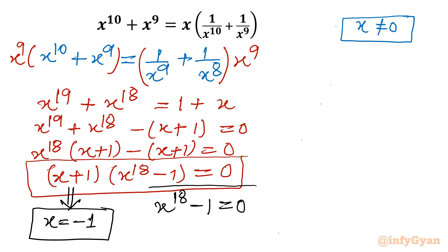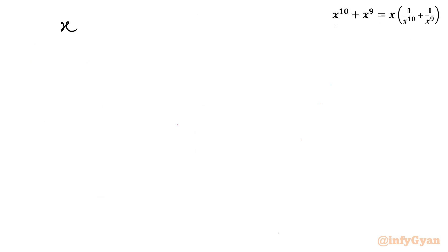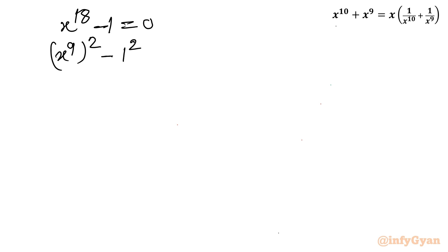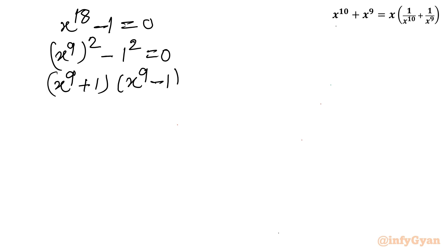Now we solve x^18 - 1 = 0 for the remaining 18 solutions. Applying the difference of two squares formula: x^18 - 1 = (x^9)^2 - 1^2 = (x^9 + 1)(x^9 - 1) = 0.